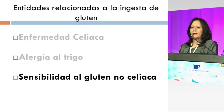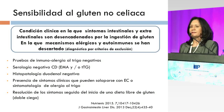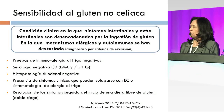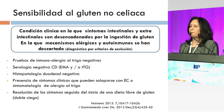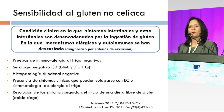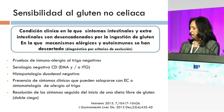Esta entidad que parece nueva pero que ya tiene varios años de discusión es la sensibilidad al gluten no celíaca. Se puede definir como una condición clínica en que los síntomas intestinales y extraintestinales van a ser desencadenados por la ingestión del gluten, pero en aquellos pacientes en los que hemos descartado, ya sea por pruebas inmunológicas negativas al trigo, ya sea por serología negativa la enfermedad celíaca, y que pueden tener una histopatología duodenal negativa o normal. La resolución de los síntomas en el caso de esta entidad va seguida del inicio de una dieta libre de gluten.